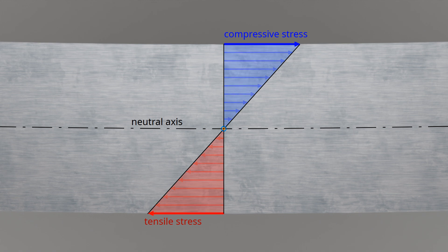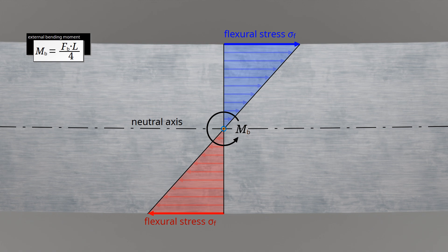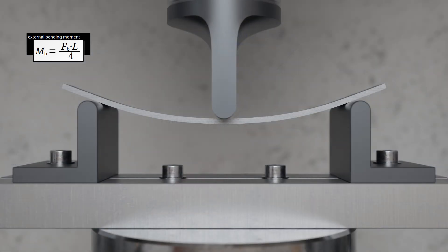The stresses occurring at the surface are decisive for material failure under bending stress, since the highest stress values are present there. These maximum stresses are referred to as flexural stresses sigma-f. Compared to the tensile or compression test, in which stresses are homogeneously distributed over the specimen cross-section, in the flexural test there is an inhomogeneous stress distribution. It can therefore be assumed that different limit stresses apply in a bending test than in a tensile or compression test. In order to define limit values for the flexural stresses, these must first be described mathematically on the basis of the external bending moment.